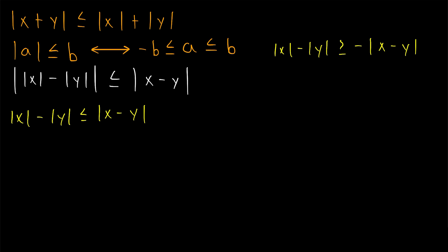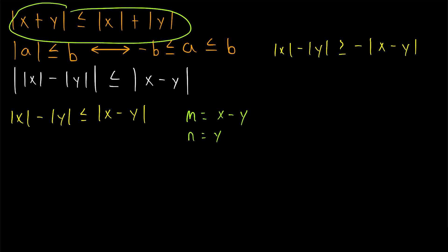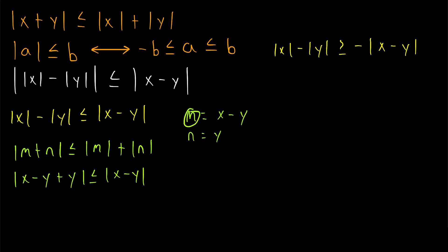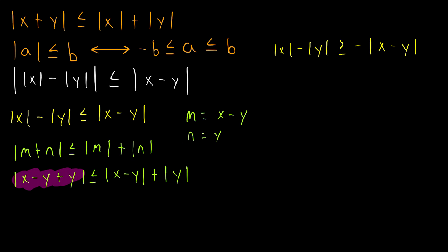To do this, we'll use a clever application of the triangle inequality theorem. Let's say we let M equal X minus Y, and we let N equal Y. If we apply the triangle inequality theorem to the absolute value of M plus N, that tells us that |M + N| ≤ |M| + |N|. By substitution, that means the absolute value of (X - Y) + Y is less than or equal to |X - Y| plus |Y|. The minus Y and plus Y on the left cancel out, leaving us with |X|, and on the right we have |X - Y| + |Y| — all the terms we need.